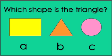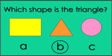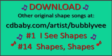Which shape is a triangle? Is it the A shape, the B shape, or the C shape? The answer is B. The B shape is a triangle.